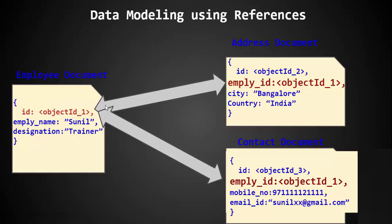We also have a contact document with an ID, an employee ID, a mobile number, and an email ID. The employee ID in both the address and contact documents refers to the object ID of the employee document — this is the same as the foreign key concept in RDBMS. The ID of the employee document is stored as the employee ID in both the address and contact documents, allowing us to determine which address and contact belong to which employee.